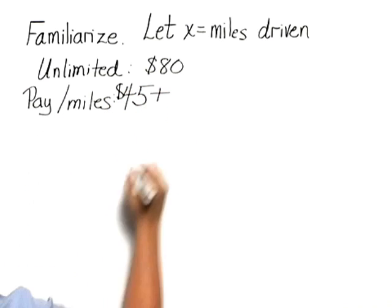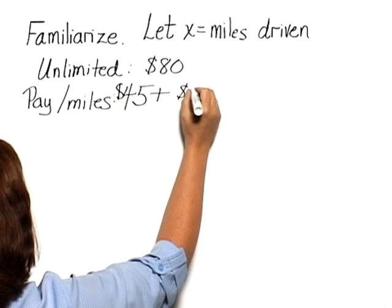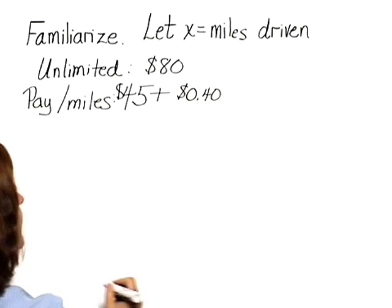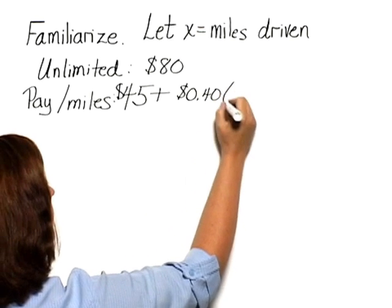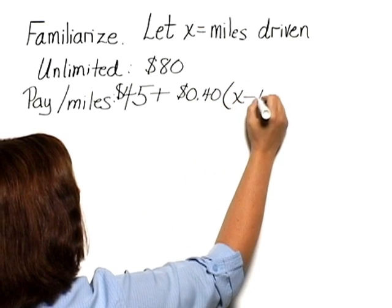plus $0.40, which we'll write in terms of dollars as 0.40, times the number of miles over 100. So we can write that as X minus 100.